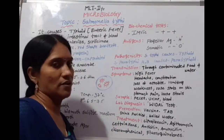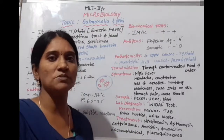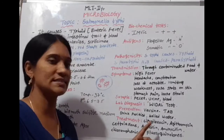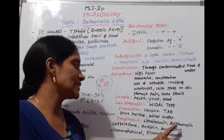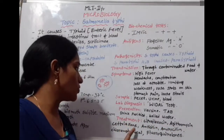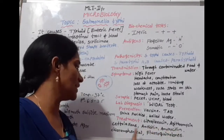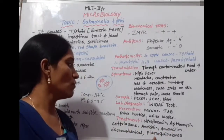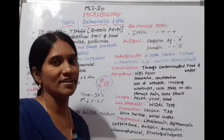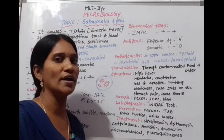Treatment is done using different types of antibiotics: Ciprofloxacin, Azithromycin, Ceftriaxone, Ampicillin, Amoxicillin, Chloramphenicol, and Fluoroquinolones. These antibiotics are useful for the treatment of typhoid.